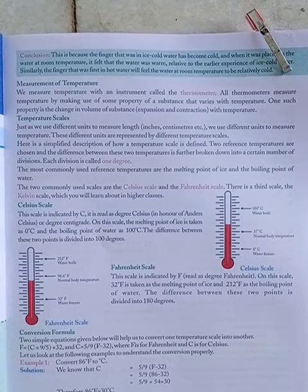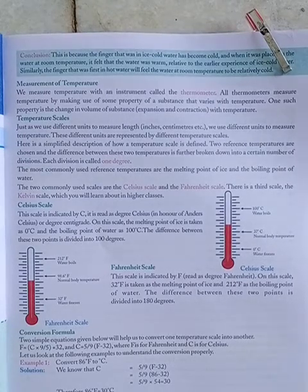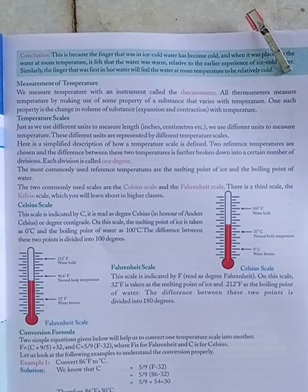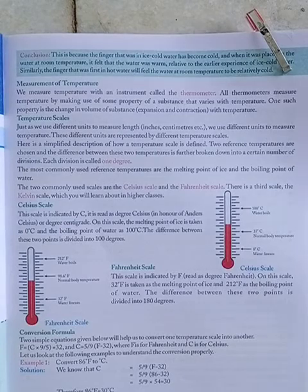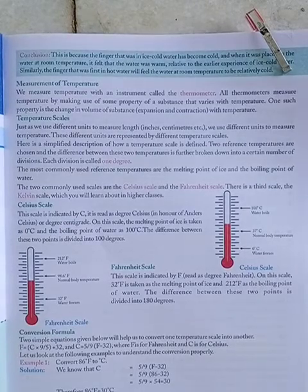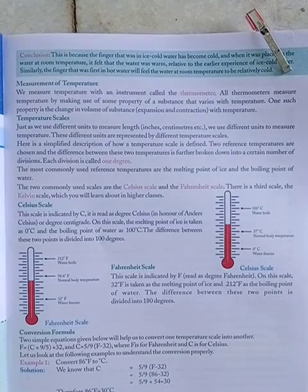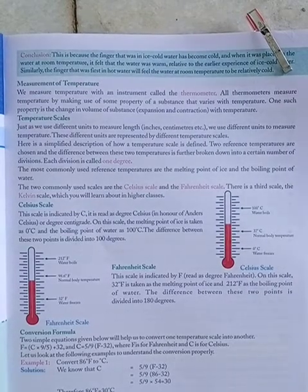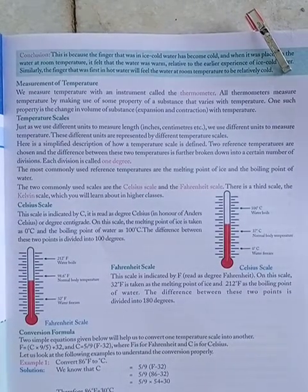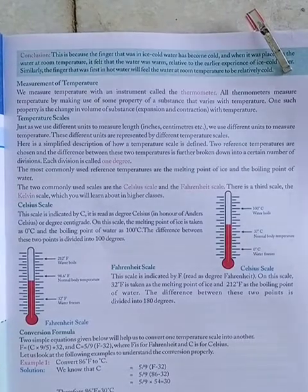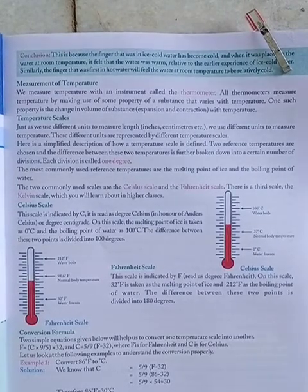Fahrenheit Scale. This scale is indicated by °F, read as degree Fahrenheit. On this scale, 32 Fahrenheit is taken as the melting point of ice and 212 Fahrenheit as the boiling point of water. The difference between these two points is divided into 180 degrees.